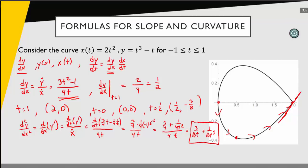We can still use both of these pieces to answer all the same questions we did from Calculus 1. For instance, where along this curve is the slope equal to 0? I look at my expression for the slope and ask where the numerator equals 0, setting 3t squared minus 1 equal to 0. That gives t equals plus or minus the square root of 1/3. Those are the locations — plugging in t gives the points, probably up here and down here — where my tangent line is horizontal.